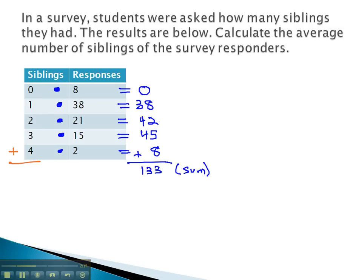How many responses did we get total? That's a different column altogether. How many responses we want to divide by how many there are, that's 8 plus 38 plus 21 plus 15 plus 2, which gives us a total of 84 is the number of responses we're working with.